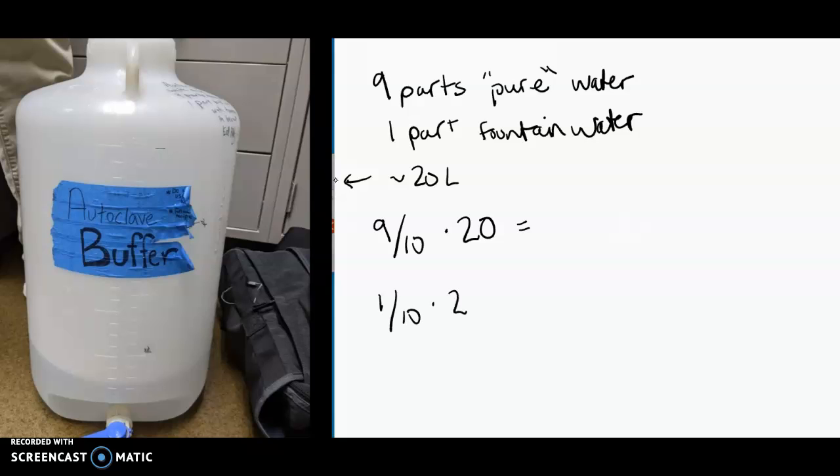If you do that math, that's 0.9 times 20, which is 18 liters of pure water, and 0.1 times 20, which is 2 liters of fountain water.